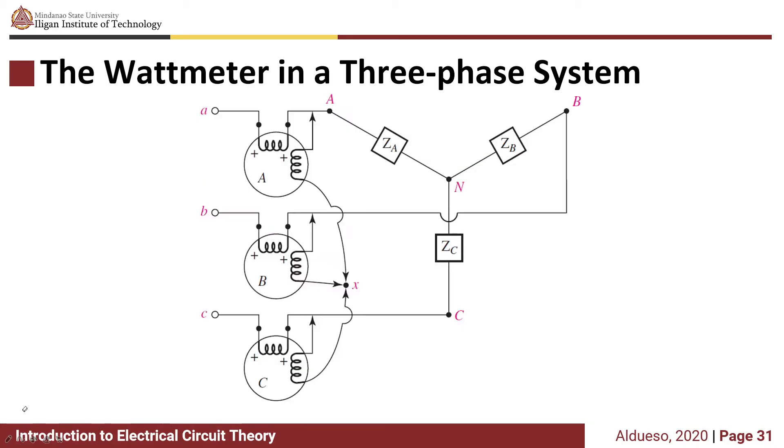Now let's consider this figure. We have a Y-connected load with three wattmeters. Let's connect this point X to node N, the neutral line.